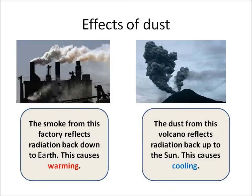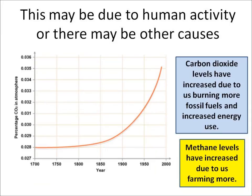It's not just greenhouse gases which may have caused this increase in temperature. Dust and smoke from a factory — that's man-made — reflects radiation back down to earth, which is going to cause global warming. Dust from a volcano — that's natural — reflects radiation back up to the Sun, which is going to cause global cooling.